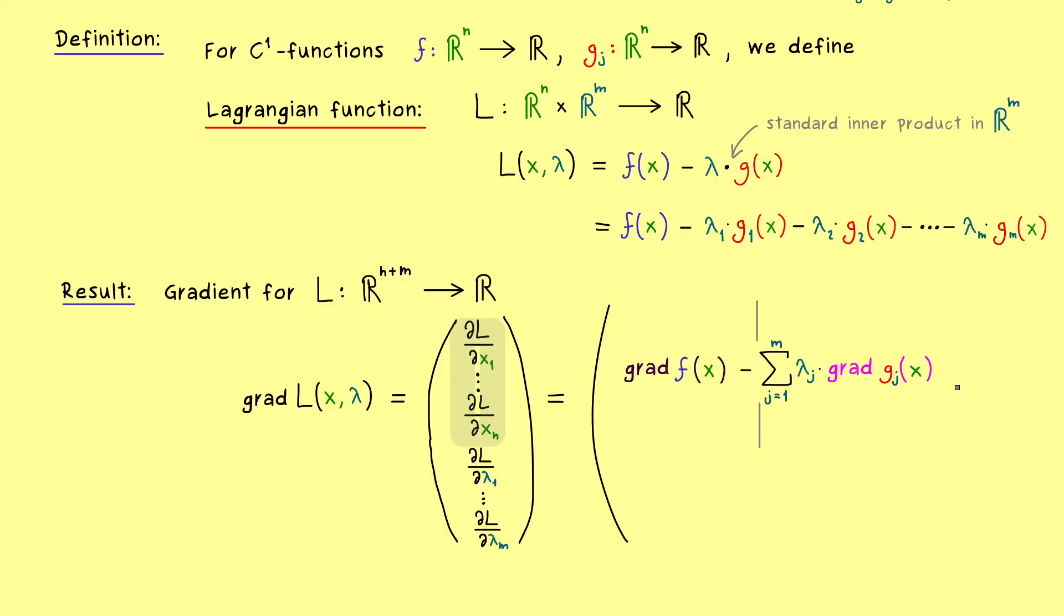So this is something we should recognize from before. However, before we discuss that, let's first finish the whole gradient here. So the next question would be, what is the partial derivative of L with respect to lambda 1. This is easy to see, because lambda 1 only occurs in this term here. So it's actually just minus g1 of x.